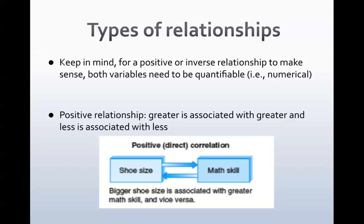We also need to talk about types of relationships. In order for a positive or an inverse relationship to make sense, both variables really need to be quantifiable—in other words, numerical. Age, cholesterol, IQ—something you can count. So if you can put a number to someone's shoe size, GPA, or number of cups of coffee, then you can look at a positive or inverse relationship. A positive relationship is where greater is associated with greater, and less is associated with less.